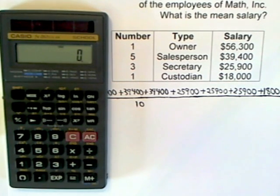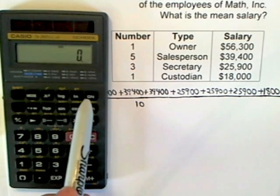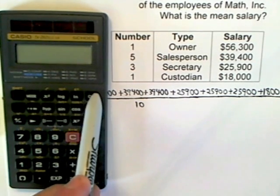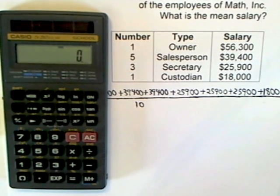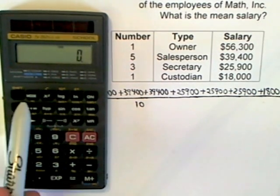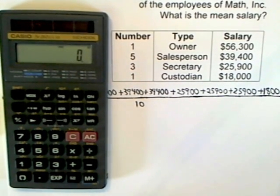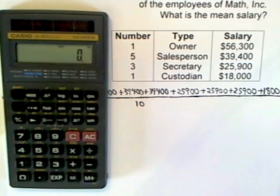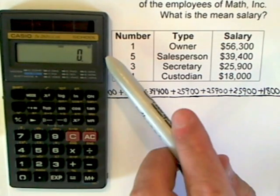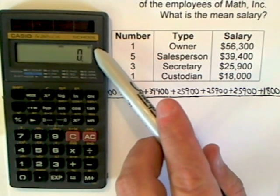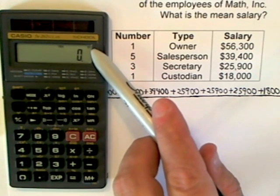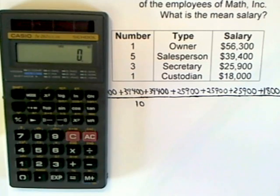The first thing I want to do is hit ON to make sure everything's cleared out of the memory and out of the data set. To go into stats mode, you press MODE, then decimal point. You should see the little SD pop up in the upper right-hand corner of the screen. Now let's enter these numbers.